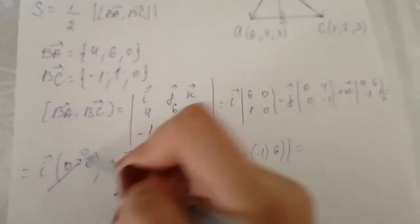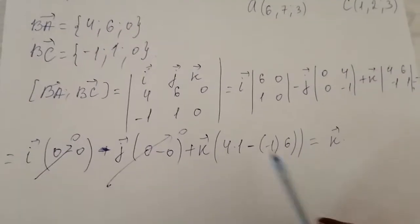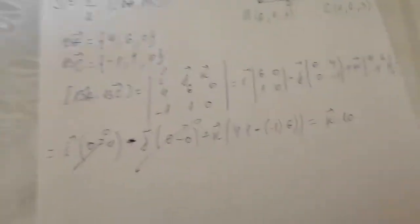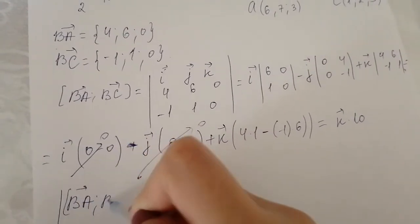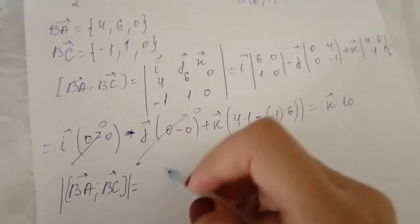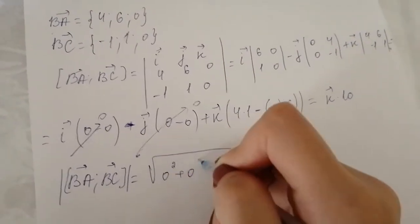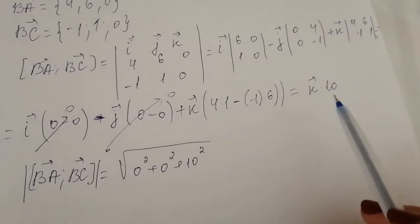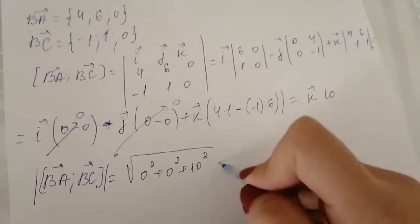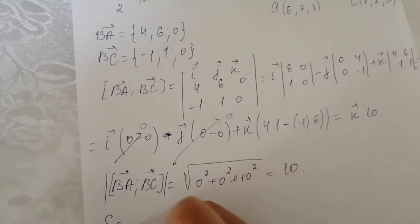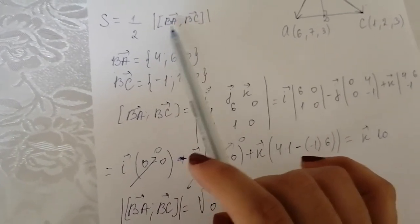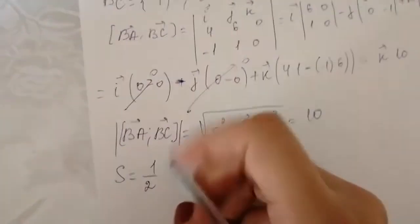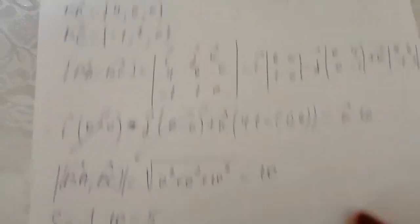So the k component is 10, and the vector product BA × BC equals (0, 0, 10). Now we find the absolute value: square root of 0 squared plus 0 squared plus 10 squared, which equals 10. The area of the triangle is one half times 10, which equals 5.